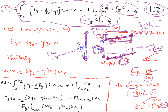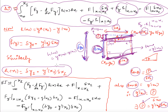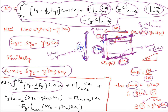So h(x₀) equals δy₀ minus y'(x₀)·δx₀. Similarly, h(x₁) equals δy₁ minus y'(x₁)·δx₁. Now substituting back into δJ: replacing h(x₁) and h(x₀) with these expressions, we substitute everywhere in the boundary terms.